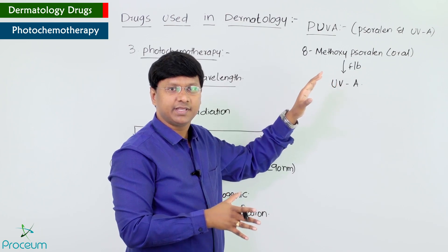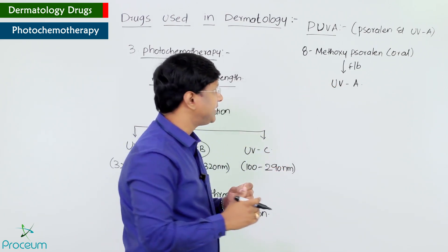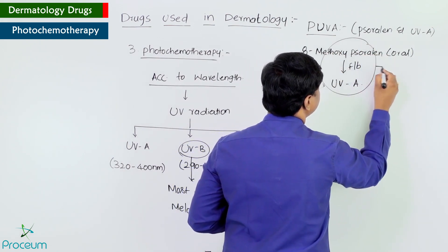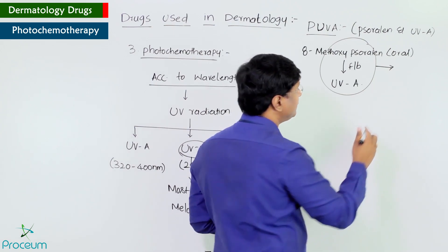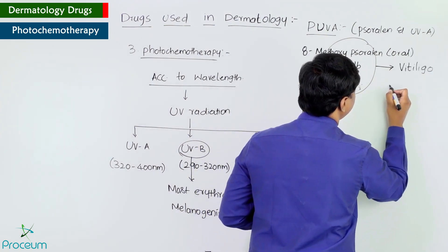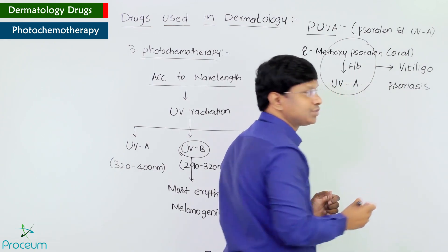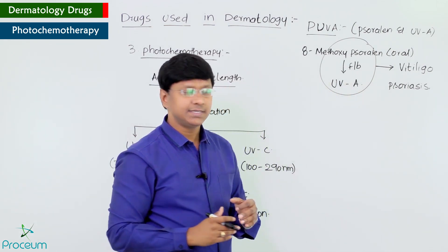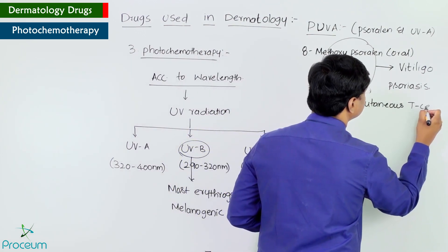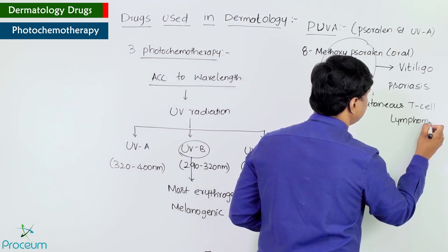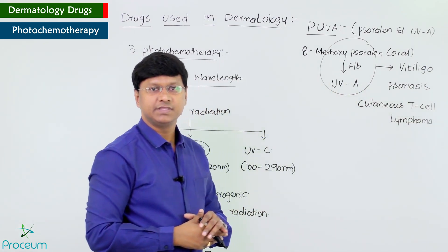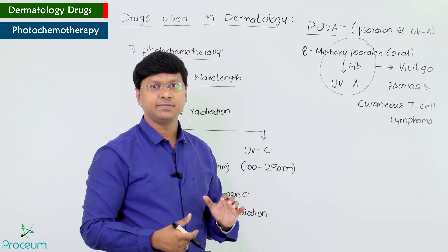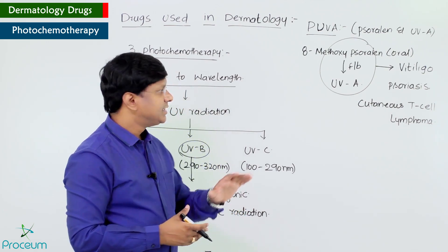The combination of 8-methoxy psoralen followed by ultraviolet A is approved for the treatment of vitiligo, psoriasis, and cutaneous T-cell lymphoma. These are the approved uses of this particular PUVA combination.